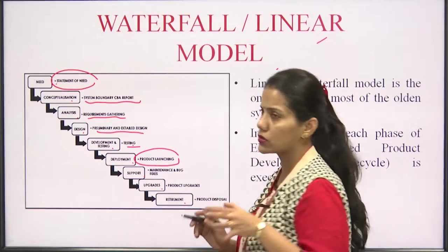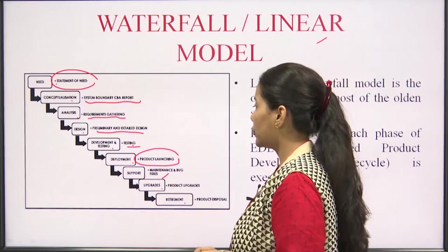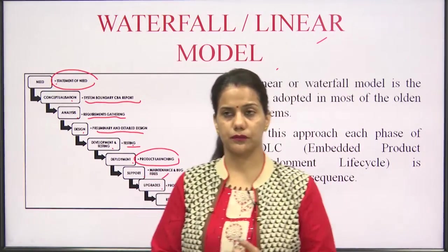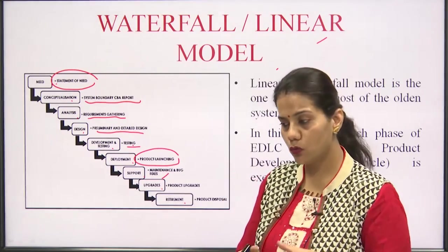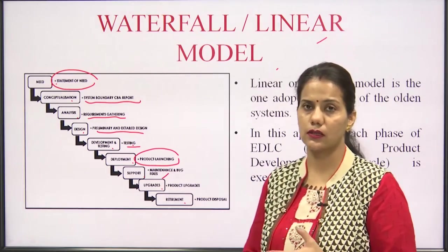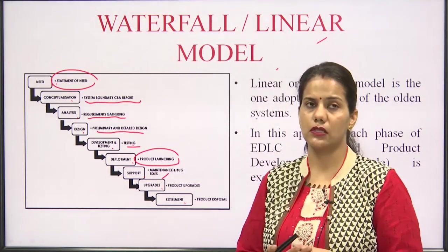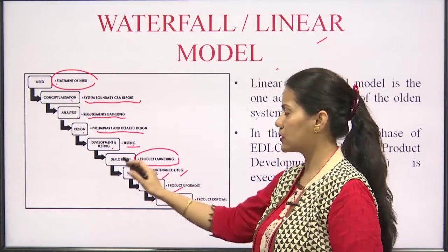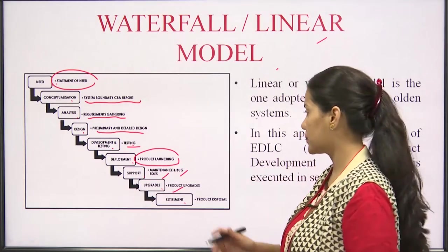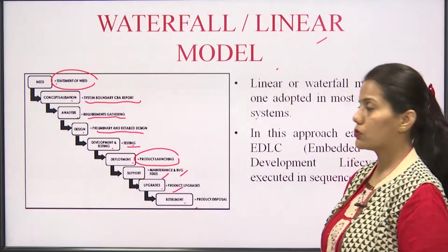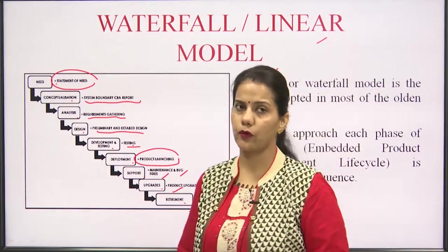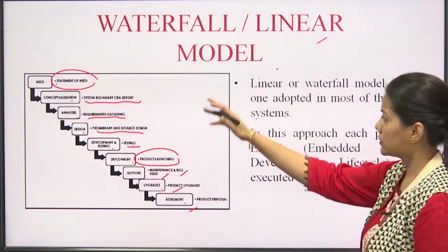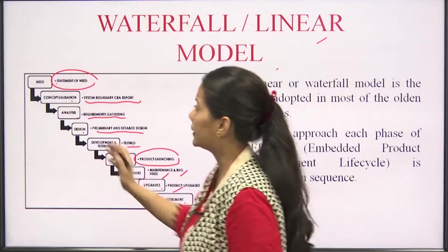In deployment, the product is launched in the user field. In the support phase, bugs are fixed and maintenance is provided. Whatever loopholes are found after deployment are studied and addressed through upgrades. Finally, the product is upgraded according to bugs and maintenance issues from the support phase, after which retirement comes — the product may become obsolete and exit the market.